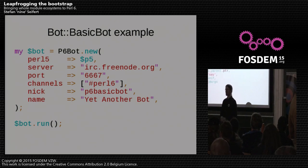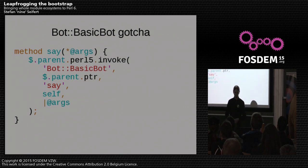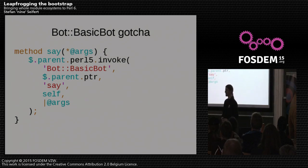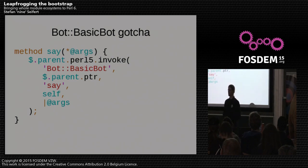It turns out that in Perl 6, every class is a subclass of Mu. This Mu class provides a 'say' method, so you can just 'say' any object in Perl 6 and get some output. As I mentioned, inheritance by delegation delegates all unknown methods to the underlying Perl 5 object. But 'say' is not unknown to Perl 6 objects, so in this case you have to be a bit more explicit and provide a 'say' method yourself.